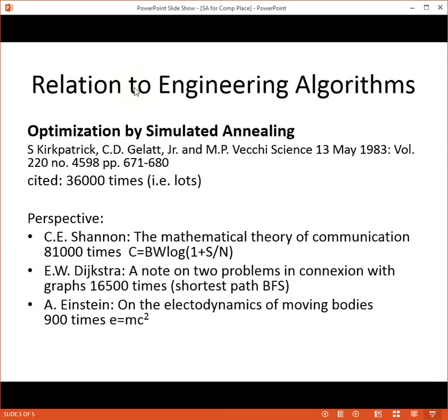To put that in perspective, Claude Shannon's Mathematical Theory of Communication was cited 81,000 times. Dijkstra's Shortest Path Algorithm was cited 16,500 times. And Albert Einstein's On the Electromagnetic Submoving Bodies was cited 900 times.